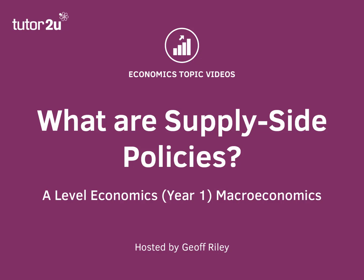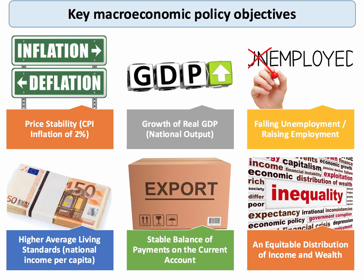Hi there, this is an introductory topic video on Supply Side Policies. Keep in mind the key macro policy objectives of government: keeping inflation under control, achieving steady sustainable growth of GDP, getting more people back into work and lifting average living standards. Governments often have an objective of improving trade performance on the balance of payments and achieving a more equitable distribution of income and wealth.